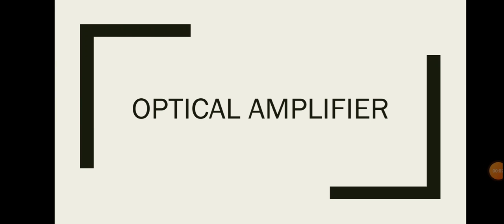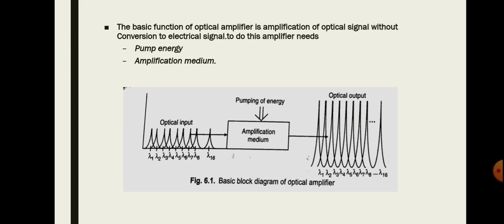In this session we will discuss optical amplifiers. The basic function of the optical amplifier is amplification of optical signals without conversion to electrical signal. To do this, the amplifier needs pump energy and an amplification medium. The pump energy is externally provided as biasing to the amplifier. Usually the amplifier is a P-N junction, so the amplification medium is the P-N junction active region.